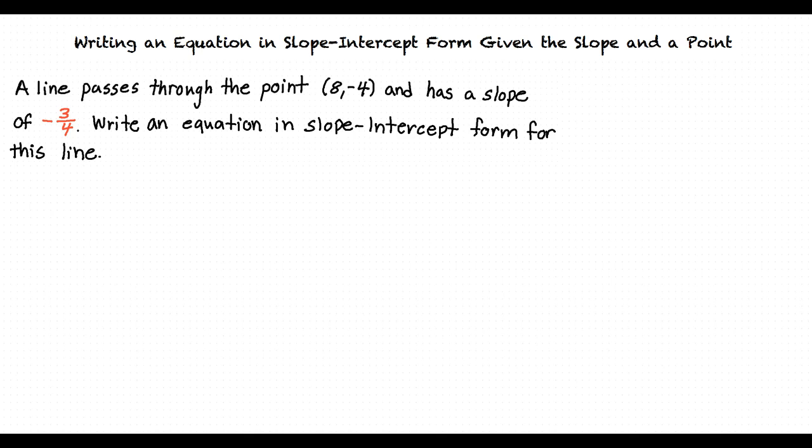What do we do first? First, we must substitute the value we have been given for the slope into the slope-intercept form equation. Doing so, our equation will now look like this.